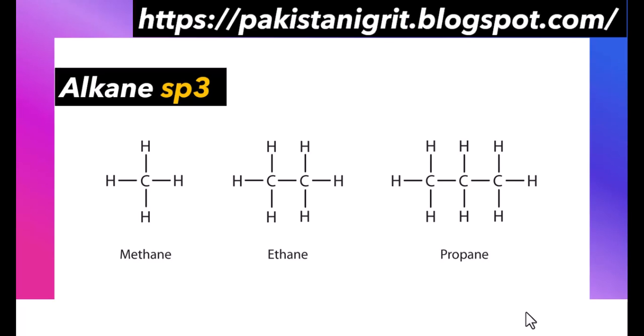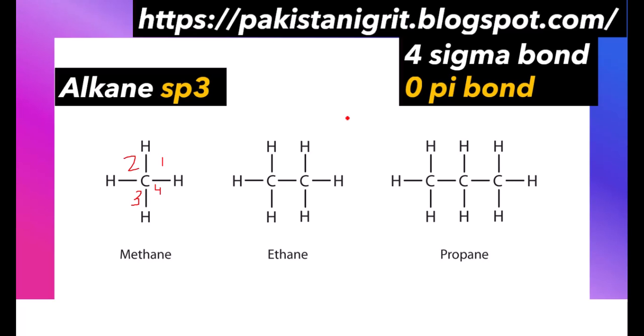Methane, ethane, and propane all have sp3 hybridization. We can determine this from the number of sigma bonds the carbon is forming. In methane, carbon is forming four sigma bonds. So in the case of carbon, if there are four sigma bonds and zero pi bonds — or at least four sigma bonds — we will have sp3 hybridization.